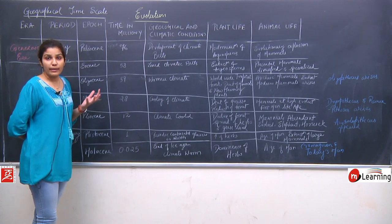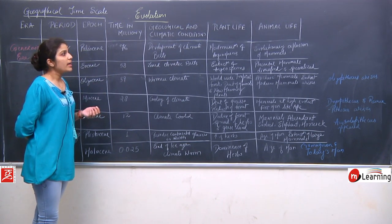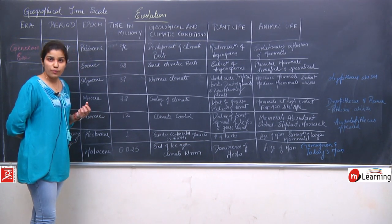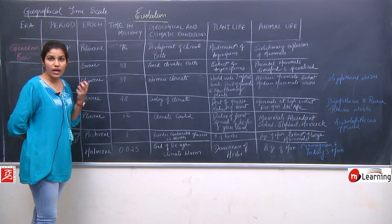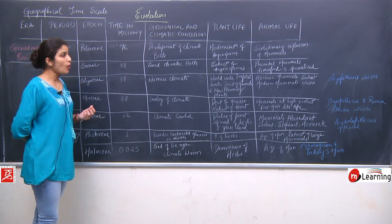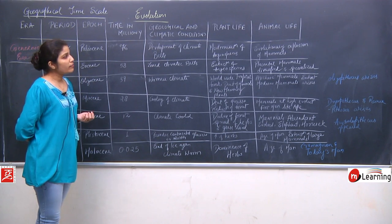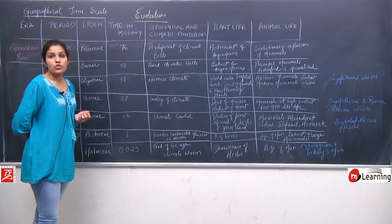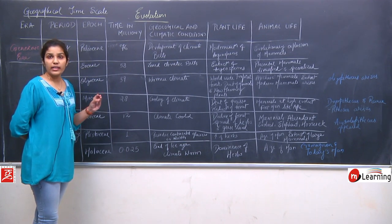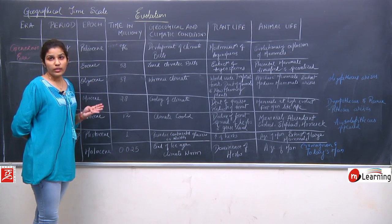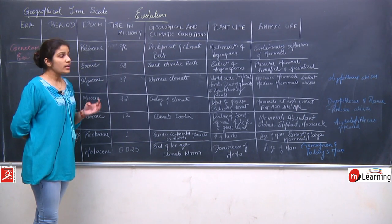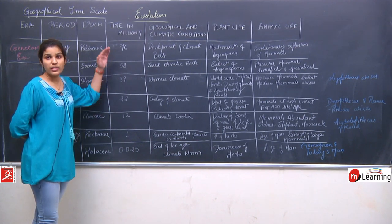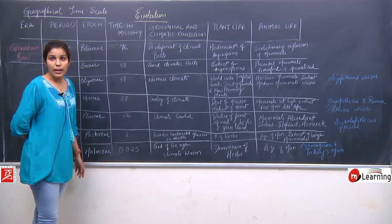Different types of climatic beds started to develop in the Paleocene epoch. In plant life, there was modernization of angiosperms — angiosperms became more and more modern. In animal life, there was an evolutionary explosion of mammals. Earlier in the Mesozoic era, Prototherian, Metatherian, and Eutherian mammals had evolved. Now there is a great explosion in the evolution of mammals, and this era will be the era of the mammals.